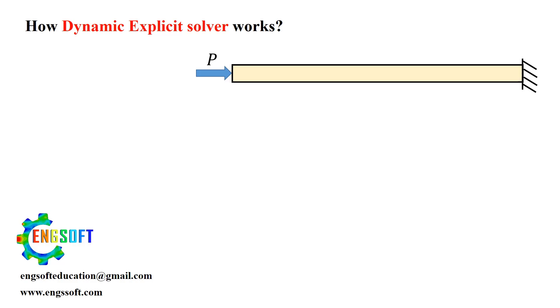First, let's dive into a simple example, compressing a bar using the explicit method. We're working with four nodes and three elements.